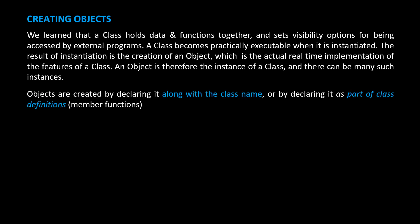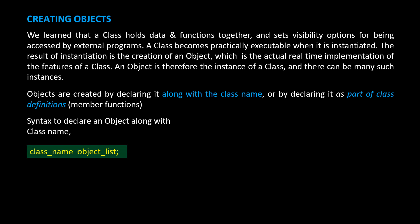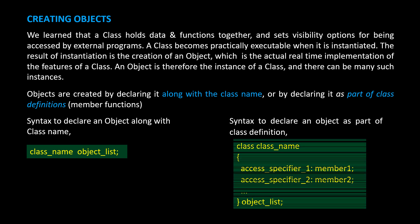Objects are created by declaring it along with the class name, or by declaring it as part of the class definition where we define functionality of member functions. The syntax to declare an object along with the class name is: 'class_name object_list'. The syntax to declare an object as part of the class definition has the list of objects declared at the end of the class definition.